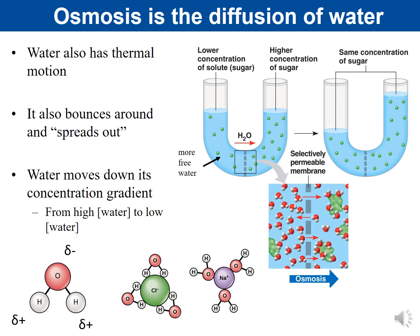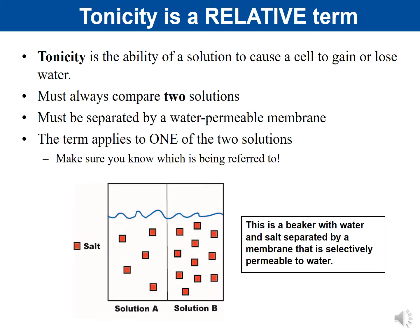This movement of water is referred to as osmosis — osmosis is the diffusion of water. Tonicity is the ability of a solution to cause a cell to gain or lose water. You always need to compare two solutions, separated by a water-permeable membrane, because a cell can only gain or lose water depending on solute concentration.